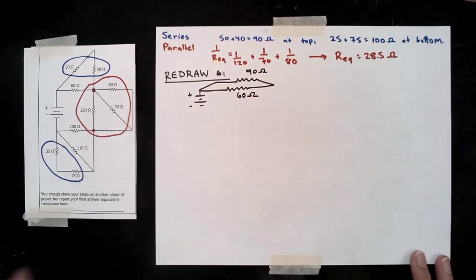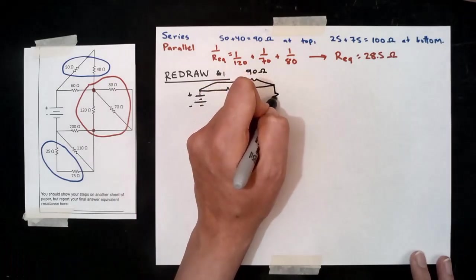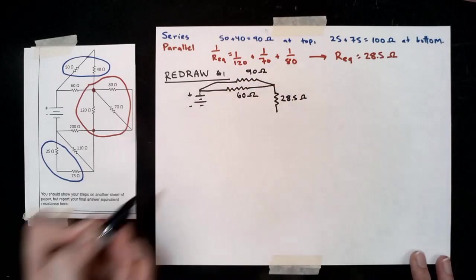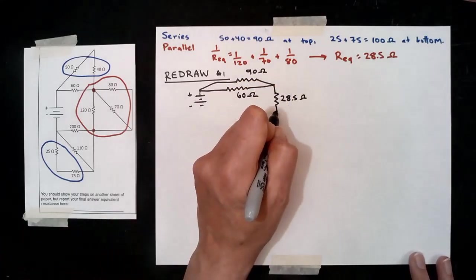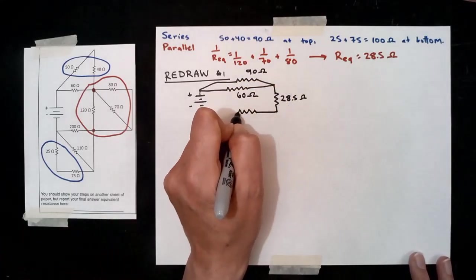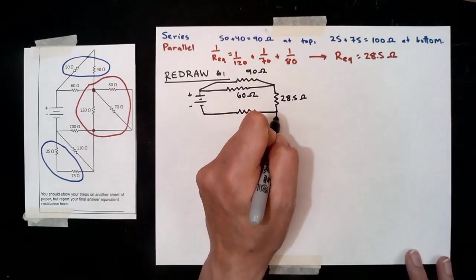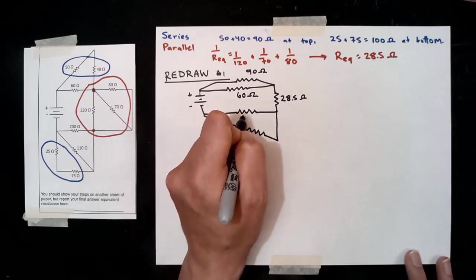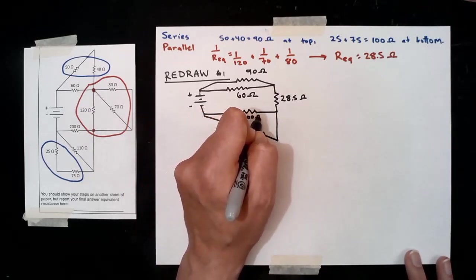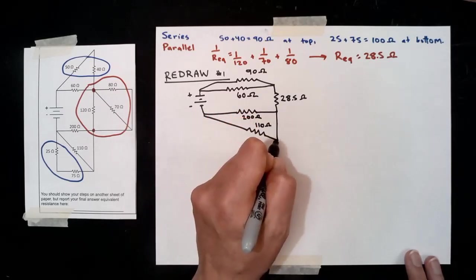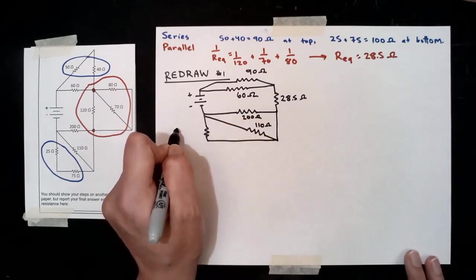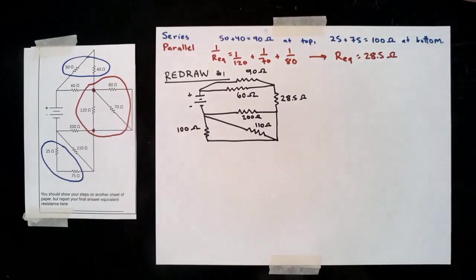We still have the 60 ohm resistor, but now it's in parallel with that top 90 ohms that we calculated. We can replace that whole red area with the equivalent resistance of those original three. We have the 200 ohm resistor, and it is in parallel with the 110 that was already there. We can add in somewhere the 100 ohm equivalent resistance that we've replaced it with.